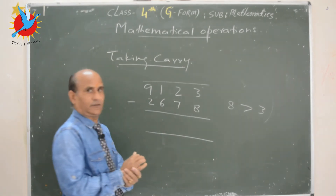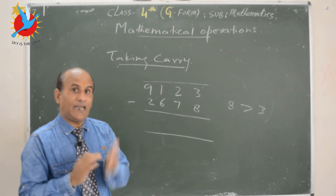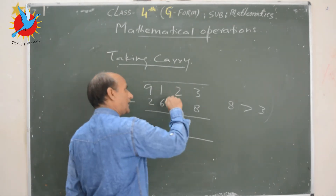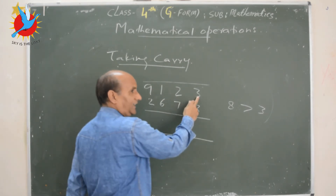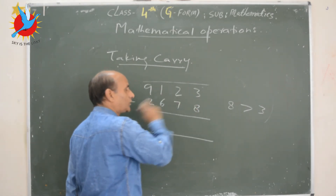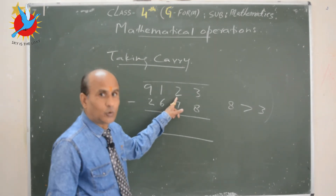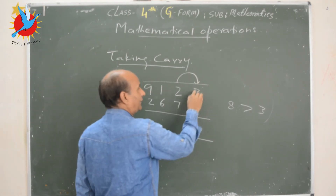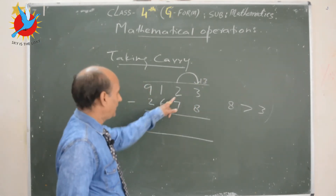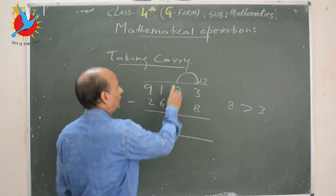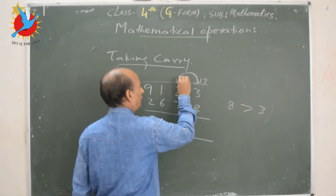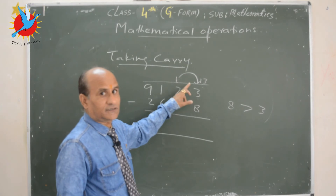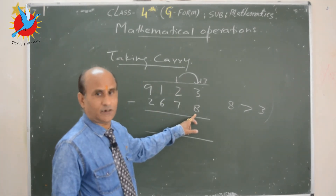Take the carry from the previous digit. Here 3's previous number is 2. When you take the carry from 2, it becomes 13 here and only 1 is left in the previous place. Now 13 minus 8 equals 5.